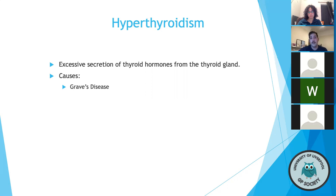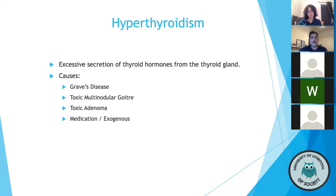Other causes include a toxic multi-nodular goiter — multiple nodules within the gland which can secrete thyroid hormone — and a toxic adenoma, a single thyroid-secreting nodule. There are also medication and exogenous causes. It is possible to give thyroid hormone as a medication — typically for patients with hypothyroidism — but overdosing or taking too large a dose too frequently could lead to a state of hyperthyroidism.